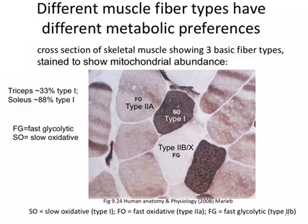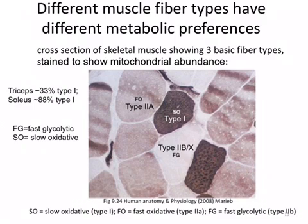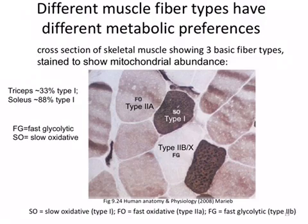Muscles are made of different fiber types that have different metabolic preferences. The image shows a cross-section of a muscle stained for mitochondria — the darker the stain, the more mitochondria there are. There is labeling for the slow oxidative type (type 1), the fast glycolytic type (type 2B), and the intermediate type called the fast oxidative, or type 2A.